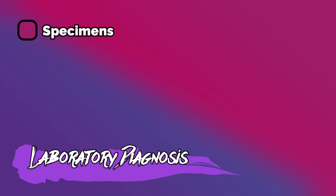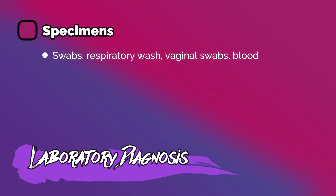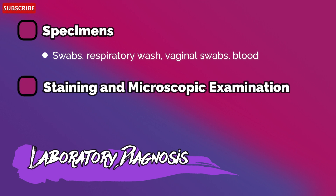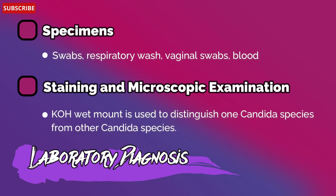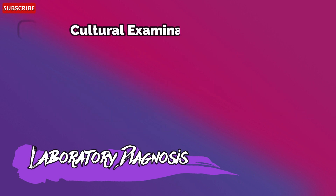Now let's see the laboratory diagnosis of Candida glabrata. Specimens include swabs, respiratory washes, vaginal swabs, and blood. For staining and microscopic examination, KOH wet mount is used to distinguish one Candida species from other Candida species.